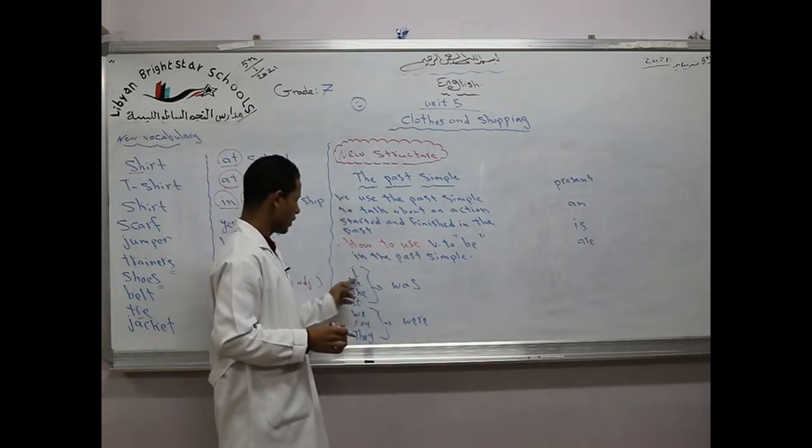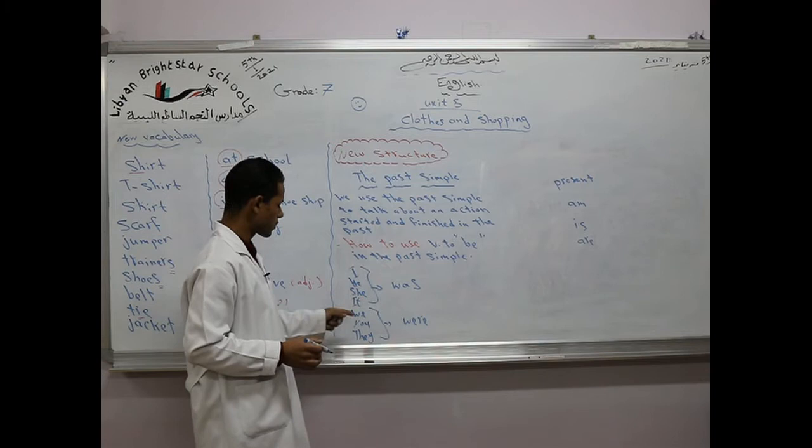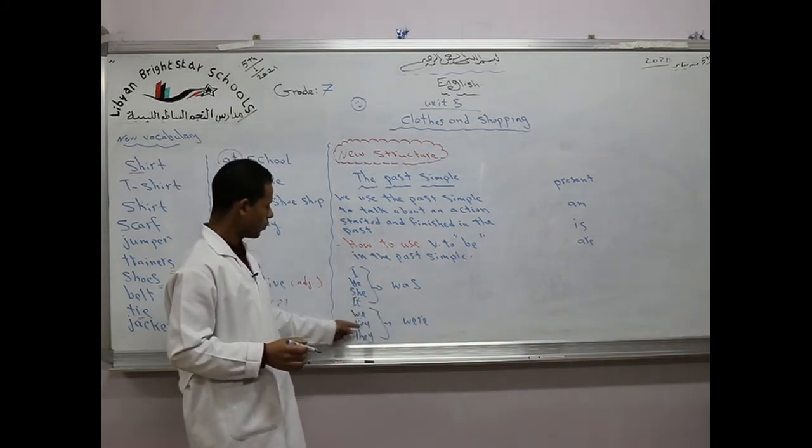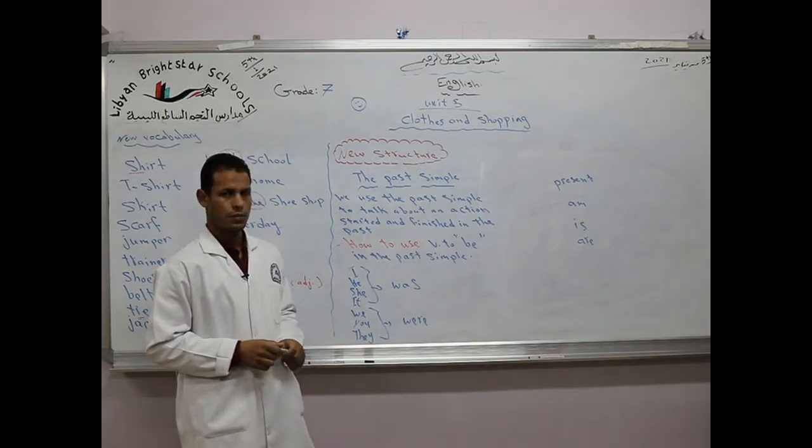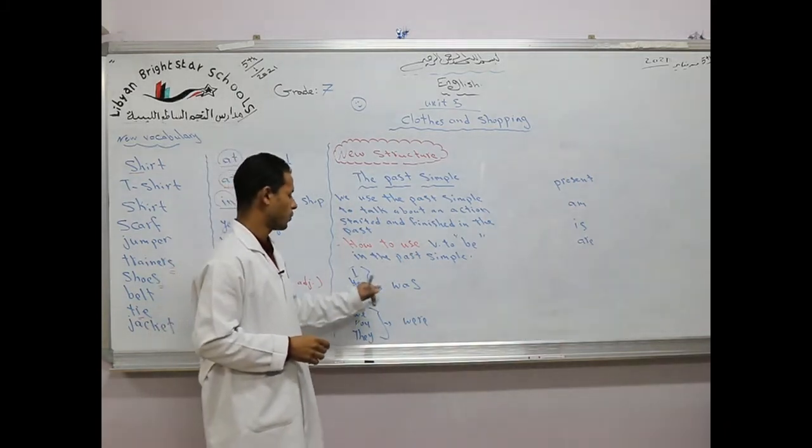I was, he was, she was, it was, we were, you were, they were. That's about the past simple with the verb to be.